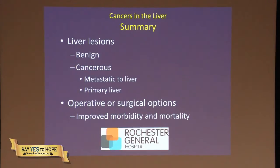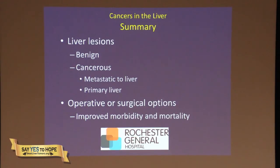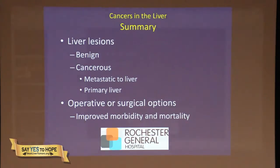To summarize: we've covered the location of the liver, liver masses — including benign and cancerous lesions — and the distinction between cancers that spread to the liver from elsewhere versus cancers that start in the liver, usually in people with pre-existing chronic liver disease. We've also discussed surgical options including resection and transplantation, and the improved morbidity and mortality associated with modern surgical care. Thank you.